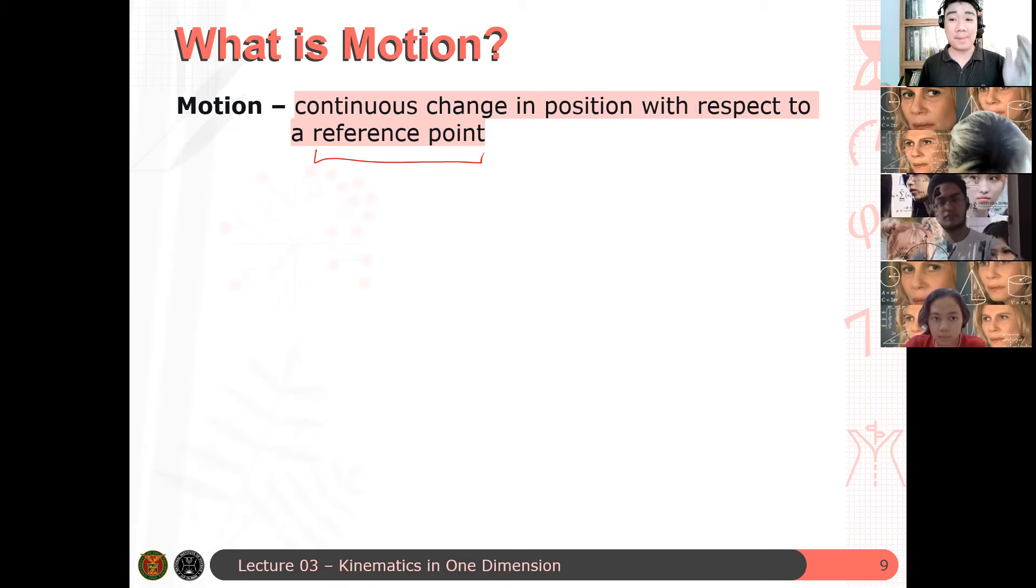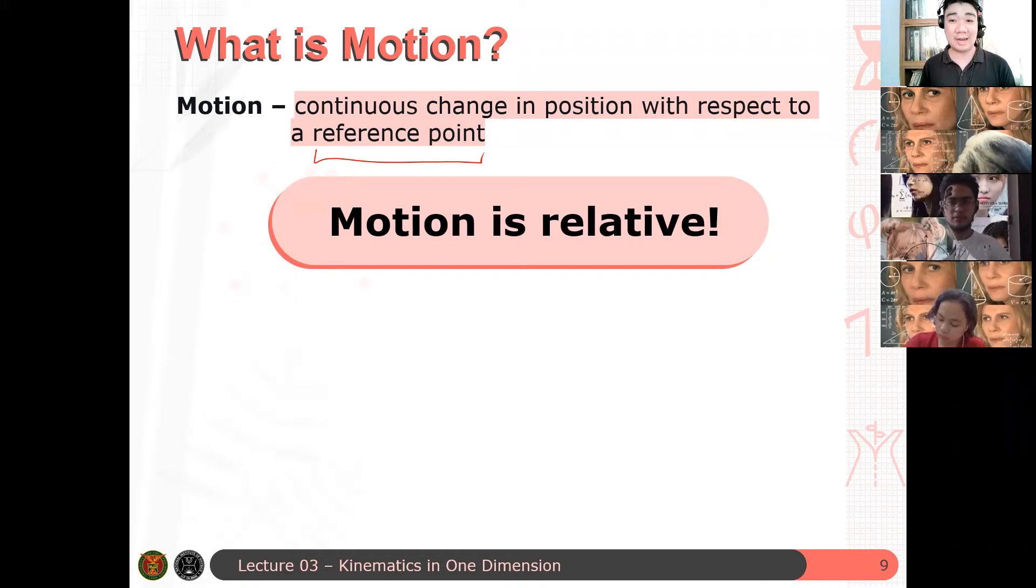As a consequence, because an observer sees the motion of an object, and each observer, of course, has some knowledge on the motion, motion is relative. Don't forget this. Motion is relative, and it is dependent on the observer that is looking at the motion of an object. Motion is relative. It's not absolute.